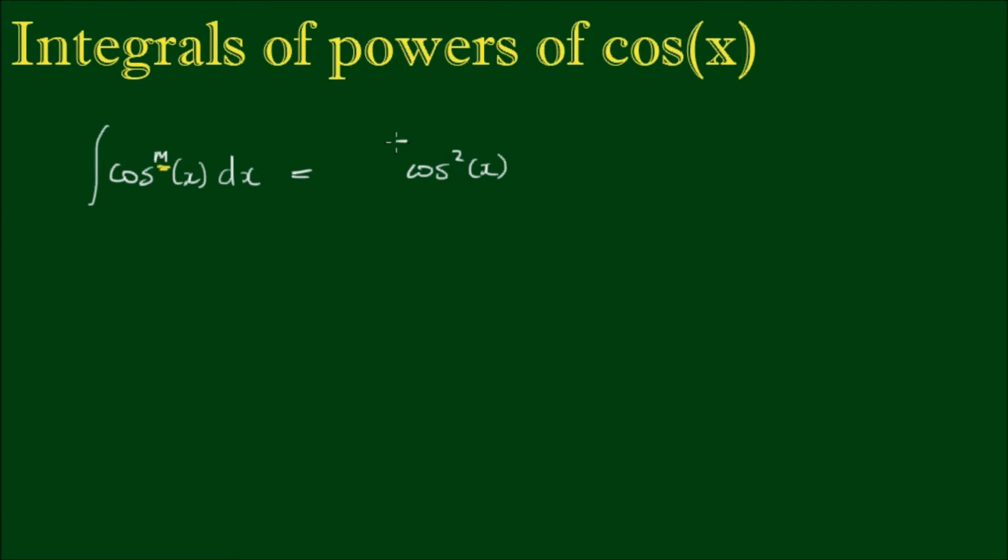We can express cosine to the mth power as cosine squared to the m minus 2 power and apply the half-angle formula to this. But unfortunately, as m increases we have to apply the half-angle formula multiple times in order to reduce the mth power to the first order, so that we end up with an expression that we can integrate.